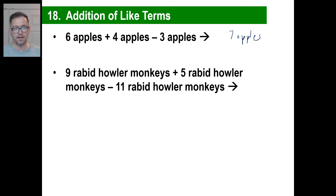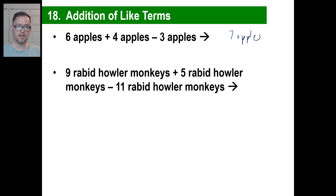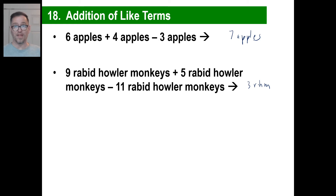Let's say you have 9 rabid howler monkeys and 5 rabid howler monkeys, but then you relocate 11 of the rabid howler monkeys. How many do you have left? You had 9 and 5, that was 14. Then you subtract 11 when you relocated them to a safe new place to live, and you would have 3 rabid howler monkeys. Those are all the same things, so you can count how many you have.